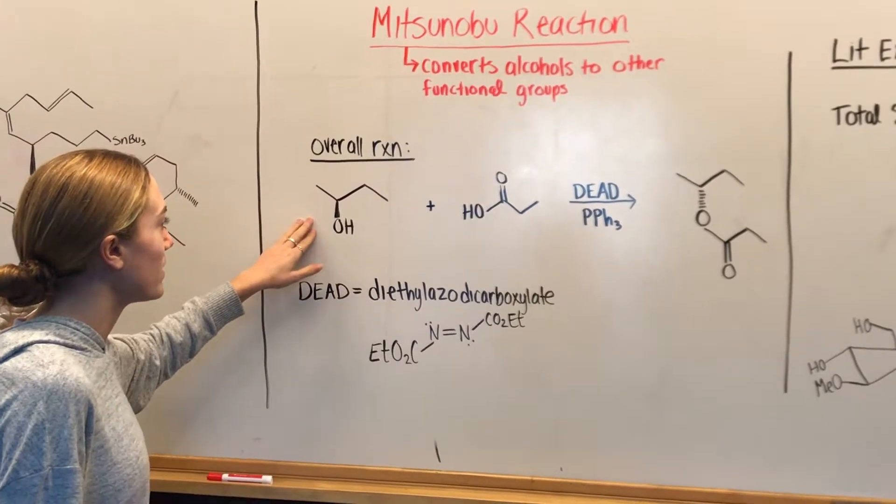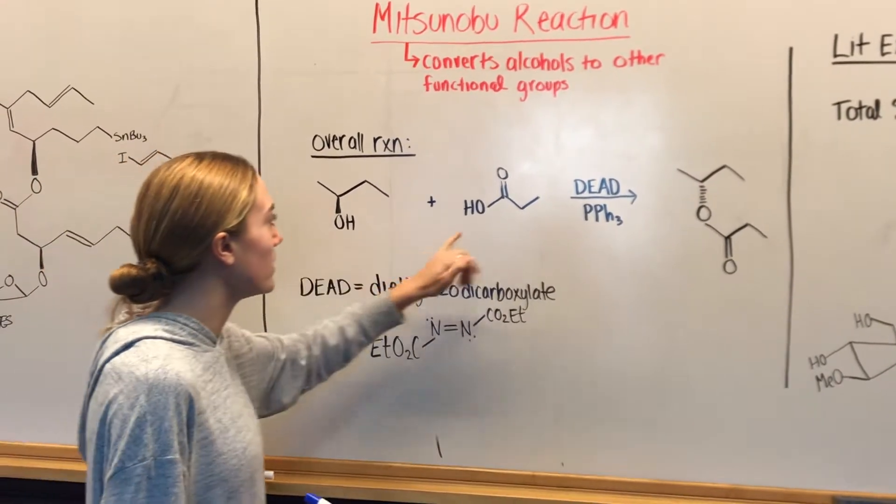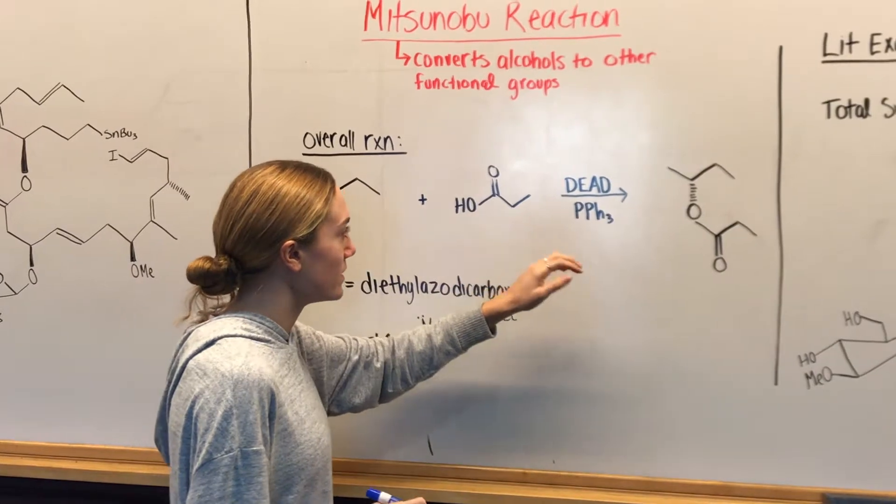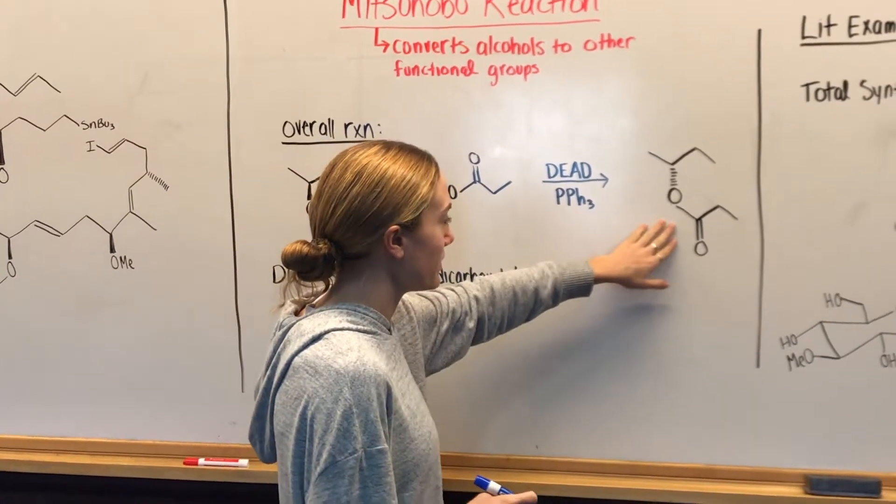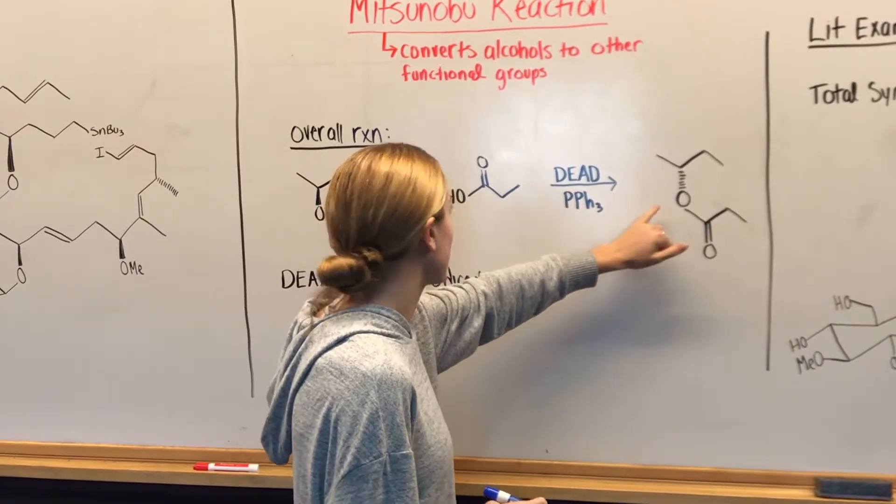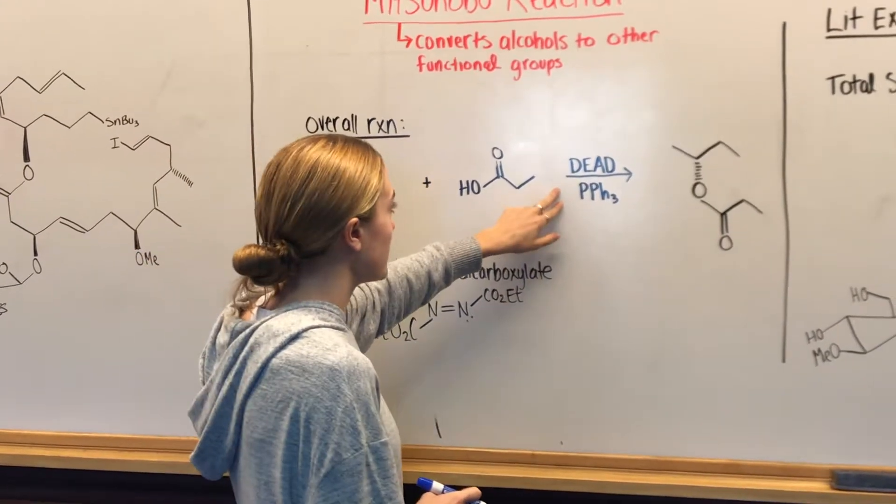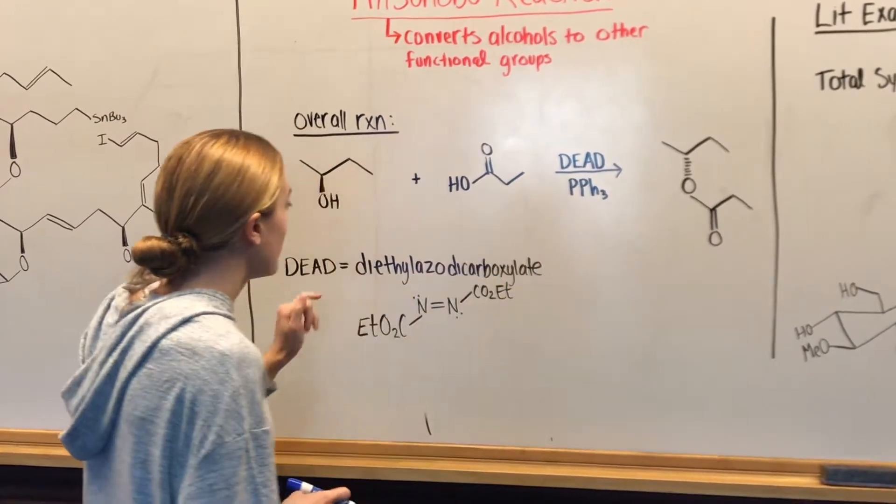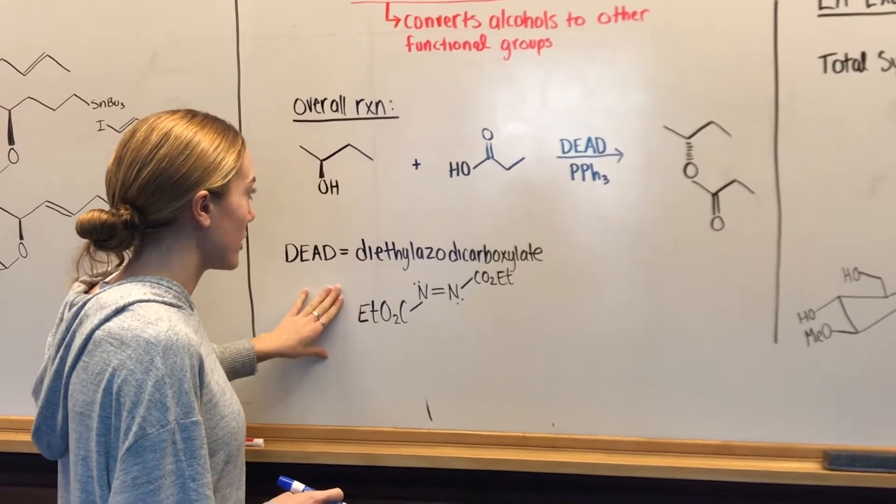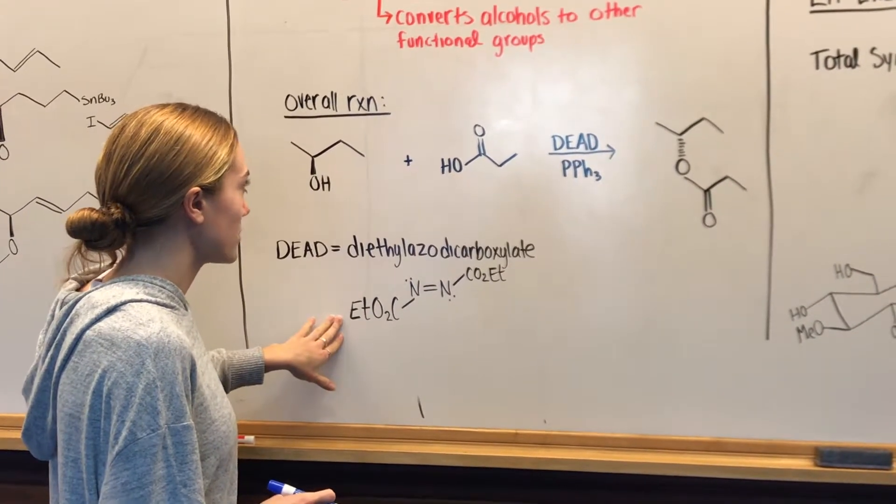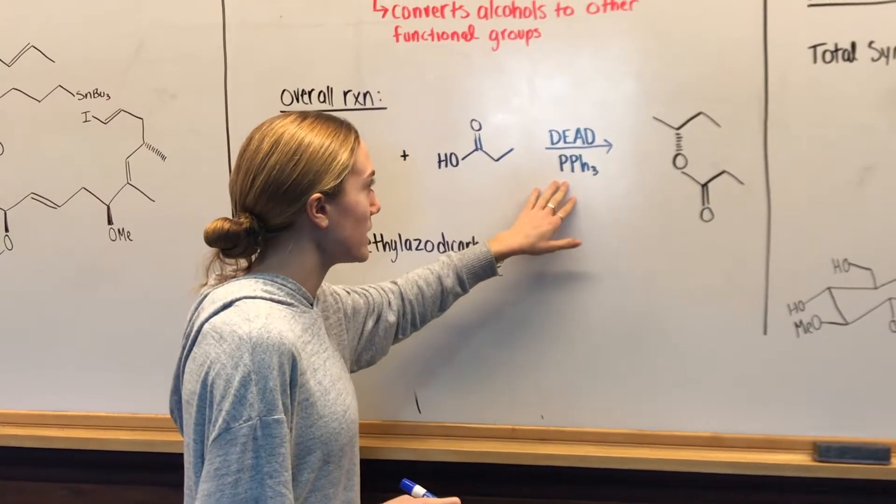The basic example we have here is this basic alcohol and this carboxylic acid using these two reagents that creates this product that has inverted stereochemistry at that center carbon. The two reagents we're using are DEAD, which is diethylazodicarboxylate, which has this structure down here, and triphenyl phosphine.